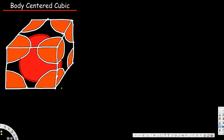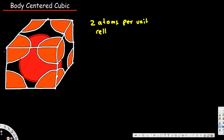In this video we are going to talk about body centered cubic structure. For a body centered cubic structure, there are two atoms per unit cell. Each corner has one-eighth of an atom — eight corners, four on the top and four on the bottom — giving one-eighth times eight, which equals one. Plus the one atom in the middle, that gives us two atoms per unit cell.